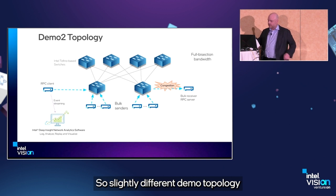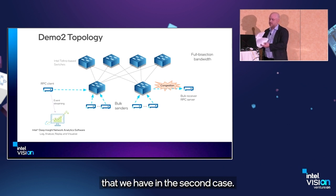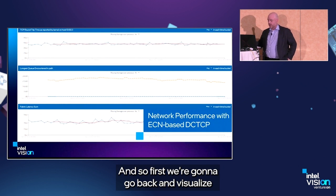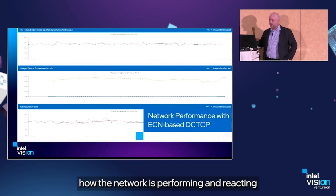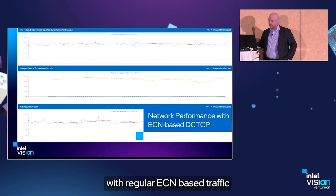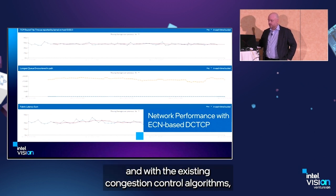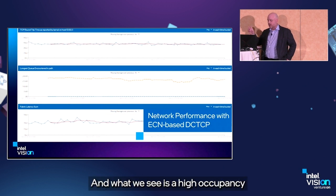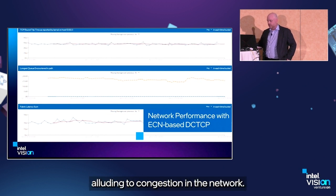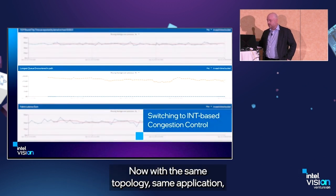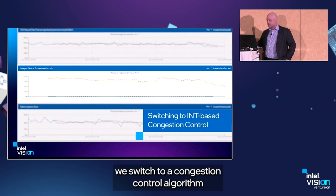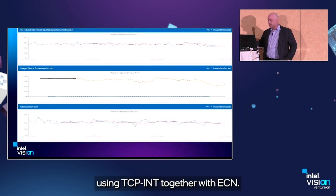In this second demo topology, we first visualize with Deep Insight how the network performs with regular ECN-based traffic and existing congestion control algorithms such as Data Center TCP — and we see high queue occupancy indicating congestion in the network. Now, with the same topology, same application, and same set of bulk senders, we switch to a congestion control algorithm using TCP INT together with ECN.